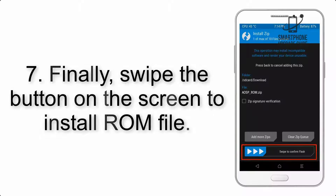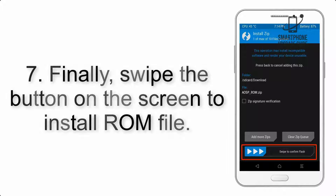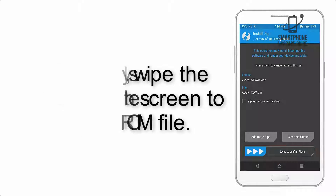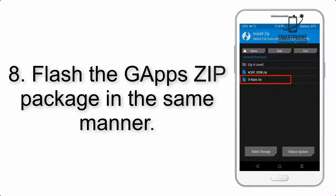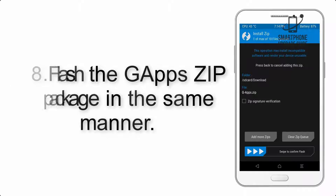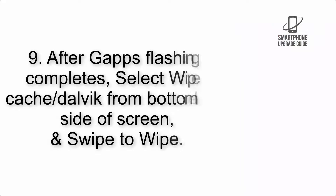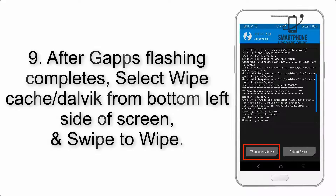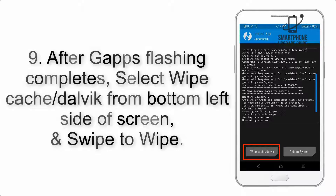Step 7: Swipe the button on the screen to install the ROM file. Step 8: Flash the GApps zip package in the same manner. Step 9: After GApps flashing completes, select Wipe Cache and Dalvik from the bottom left side of the screen and swipe to wipe.